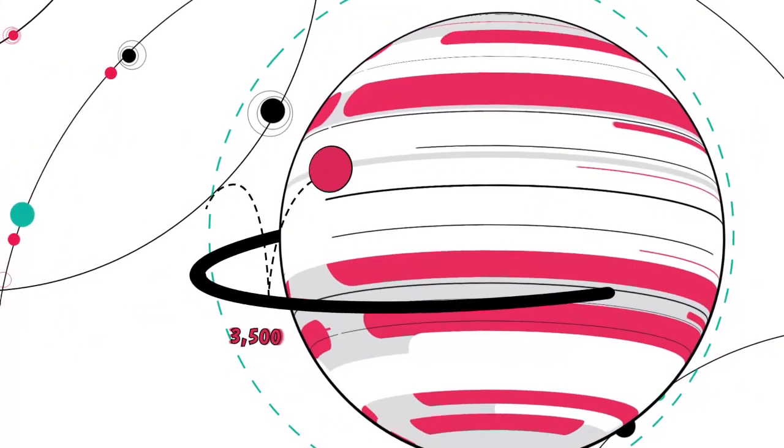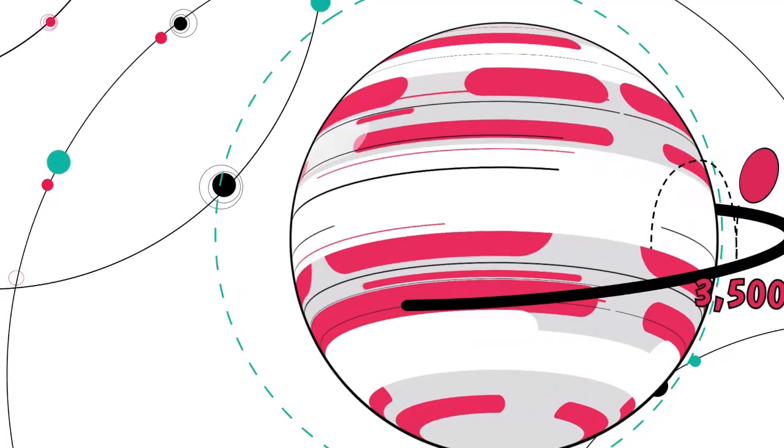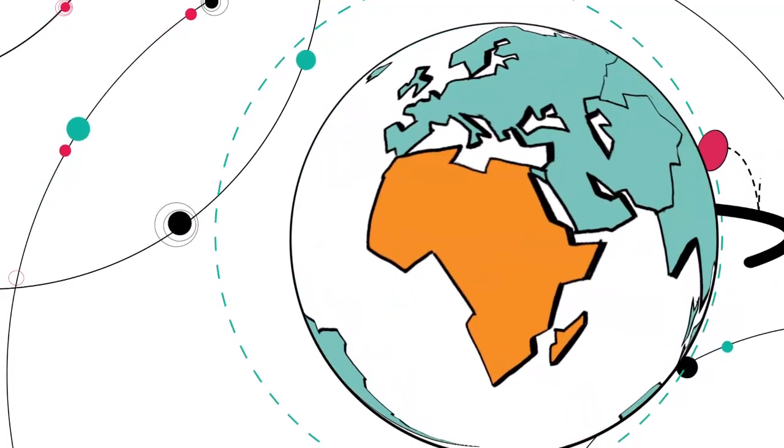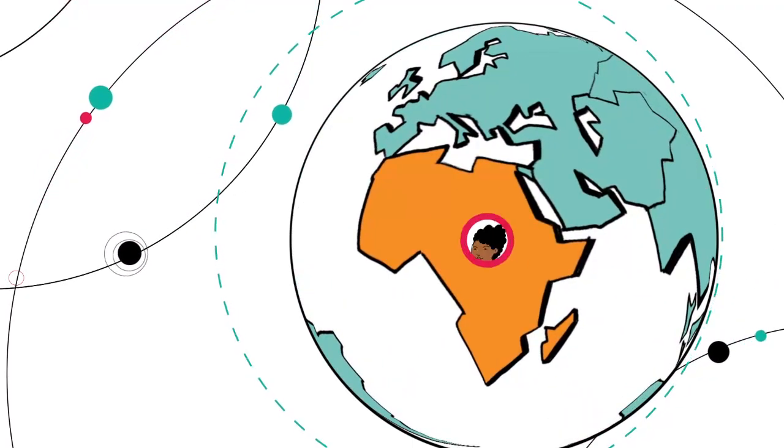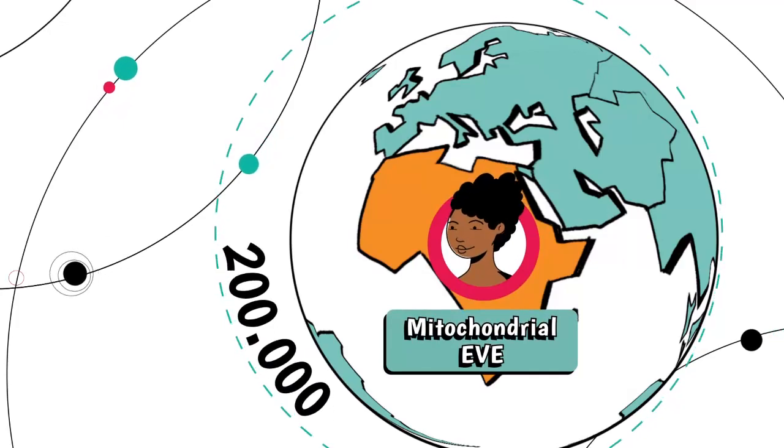Tiny changes that occur approximately every 3,500 years allow us to trace one's maternal ancestry back to the most recent common maternal ancestor of all living humans. We all share a single mother around 200,000 years ago.